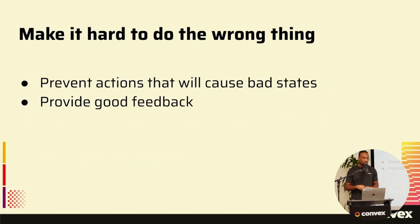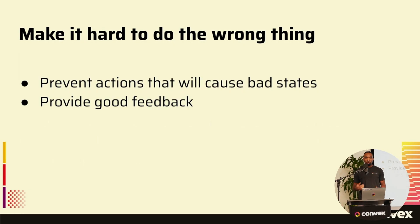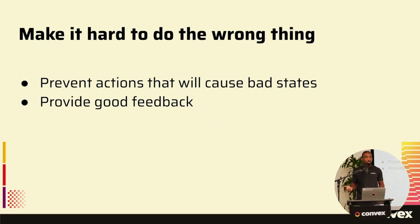The next principle I've learned is making it hard to do the wrong thing. You really want to prevent actions that create bad states. An example of this is that when we were building Chef, we were very opinionated about the template we used. This template automatically included auth, and as you know, auth is very hard. We would often see the LLM try to edit these auth files, and 90% of the time it would get into a bad state. So we had to programmatically prevent the LLM from editing those files, and when we did that, we were able to eliminate a whole class of problems.